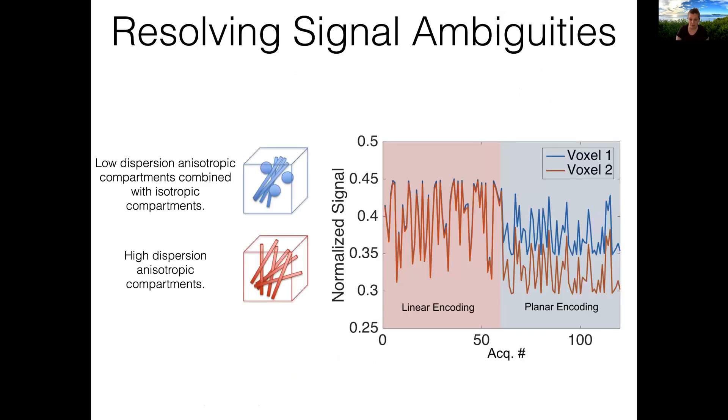The reason we are interested to encode more than once before the readout is that these types of encodings allow us to resolve certain types of signal ambiguities. I give an example here of two voxels with different compositions. The blue voxel consists of low dispersion anisotropic compartments combined with isotropic compartments. The red voxel consists of high dispersion anisotropic compartments only. Conventional linear encoding cannot distinguish between these two types of voxels because it's only sensitive to their net diffusion anisotropy. But planar encoding can distinguish between them.